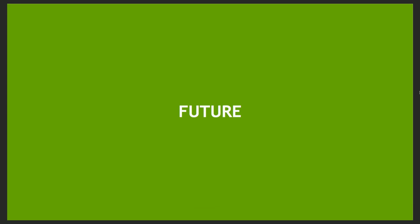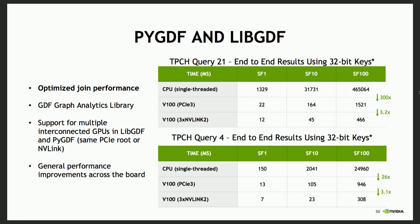Let's talk about some of the future work we're doing. With PyGDF and LibGDF, one of the big things is we're working on optimizing join performance — working on essentially a hash-based join approach for GPU DataFrames to really optimize join performance. We're working on a GDF graph analytics library, where once you have a GPU DataFrame, you'll just specify your source column, destination column, and property columns, and you'll have graph analytics available to you — things like PageRank, breadth-first search, connected components, and triangle counting. PyGDF and LibGDF are also expanding from single GPU to interconnected GPUs — GPUs on the same socket or connected with NVLink — and we're working on general performance improvements across the board.